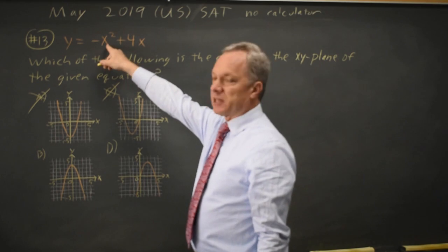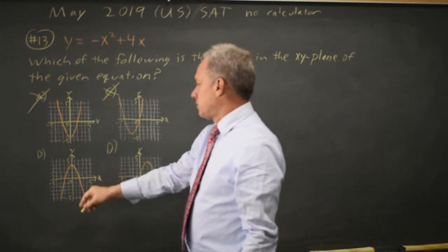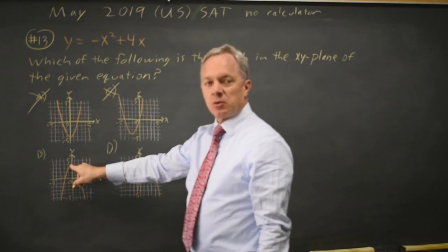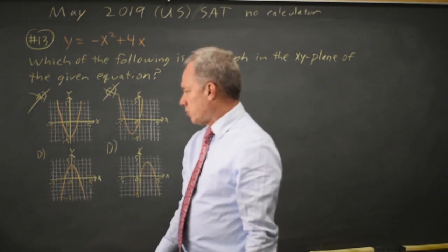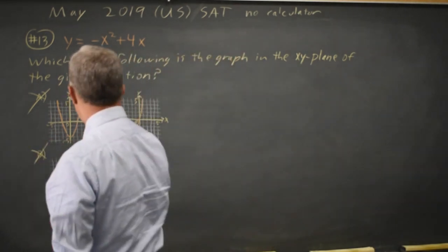We also notice that at x equals zero, y should be zero. For B, at x equals zero, y is four, which is not zero. So B is wrong.